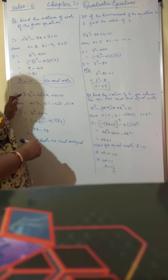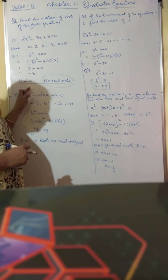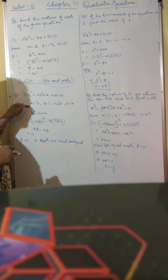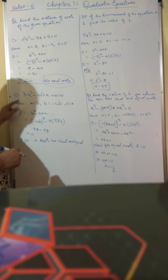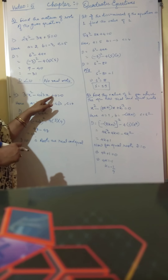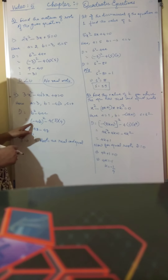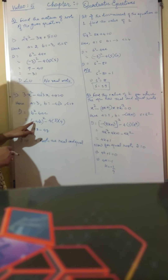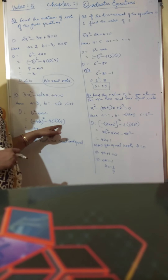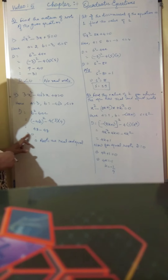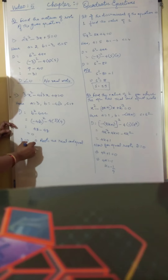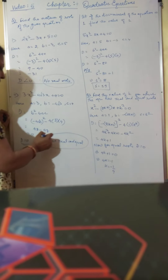Coming to the next question: 3x² minus 4√3x plus 4 equal to 0. The value of a is 3, b is minus 4√3, and c is 4. Substituting in b² minus 4ac: minus 4√3 whole squared minus 4 into 3 into 4, which comes up as 48 minus 48, equal to 0. So when D equals 0, the roots are real and equal.